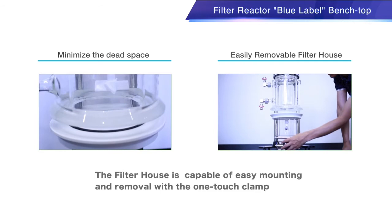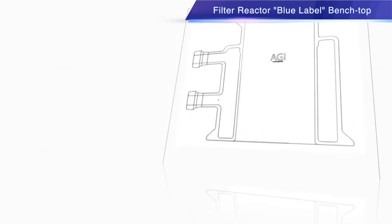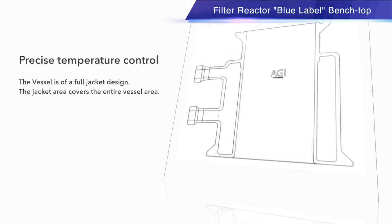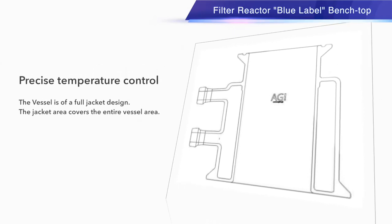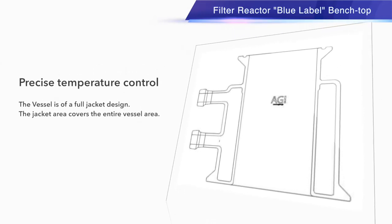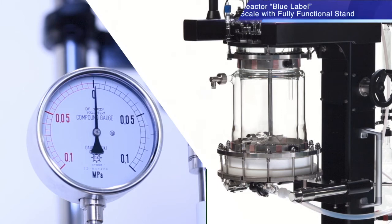The filter house is designed to minimize the dead space and is capable of easy mounting and removal with the one-touch clamp. The vessel is of a full jacket design. The jacket area covers the entire vessel area.